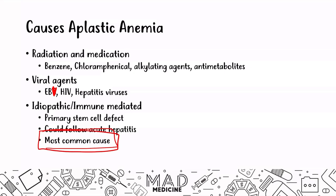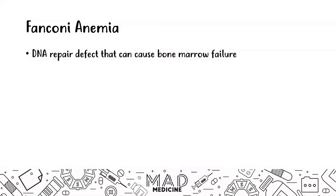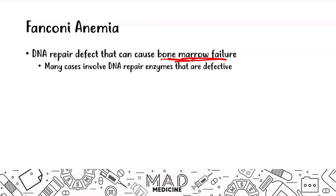A rare but important cause is Fanconi anemia, which can lead to aplastic anemia. Fanconi anemia involves defective DNA repair enzymes, leading to bone marrow failure. These defective repair mechanisms leave patients especially vulnerable to DNA strand cross-linking, particularly in rapidly dividing cells like those in the bone marrow.